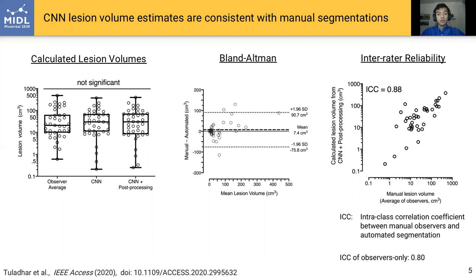Second, we performed Bland-Altman analysis on post-processed segmentations and saw that there was minimal bias in lesion volume estimates compared to manual segmentations. Finally, we showed that the lesion volume estimates were in excellent agreement with manual segmentations, as the intraclass correlation coefficient between manual and automated segmentations was 0.88, higher than the intraclass correlation coefficient between expert observers, which was 0.80.